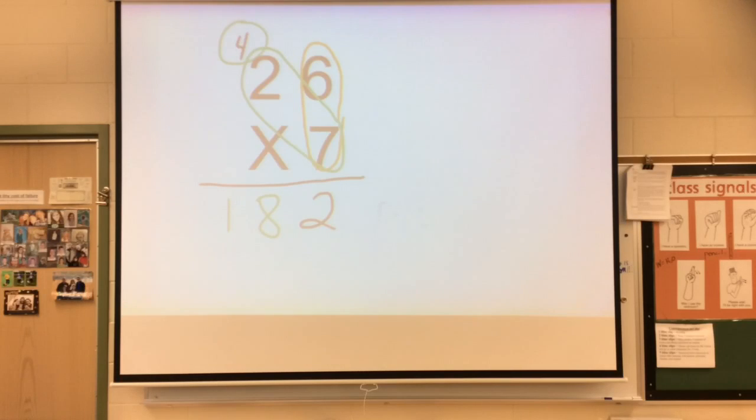Now this way of recording it, it's called new groups above. And this is the one that your parents are going to want you to do. But there's another way to do it, too. I'll show you that. This one's going to look the same thing, except when I multiply 6 times 7, instead of writing the 4 on top, I'm going to put it small down here. This is the new groups below. So there you can see my 42. Now I'm going to multiply 7 times 2 tens. That would be 14 tens plus 4 more tens. That's 18 tens. So my answer there, again, is 182.